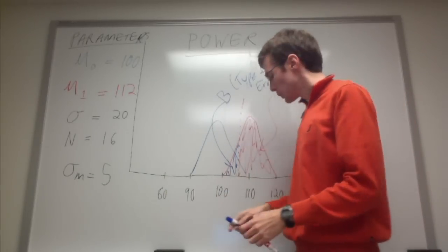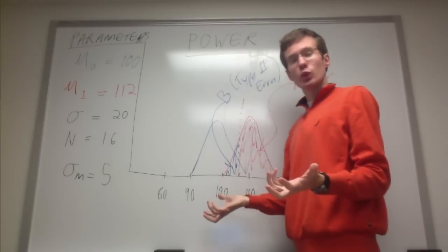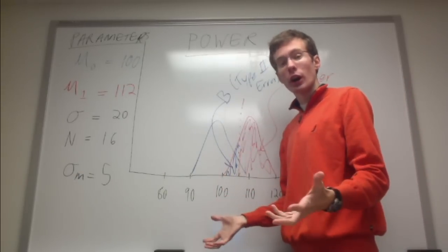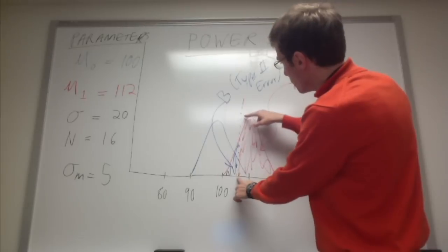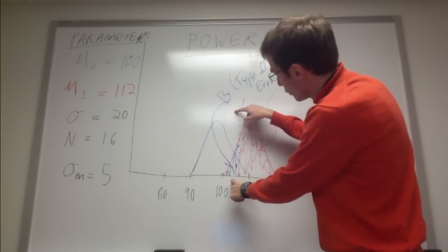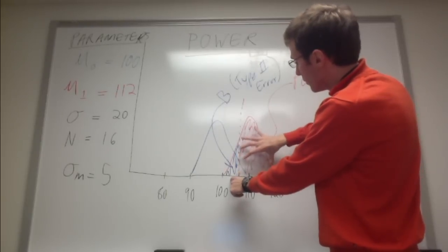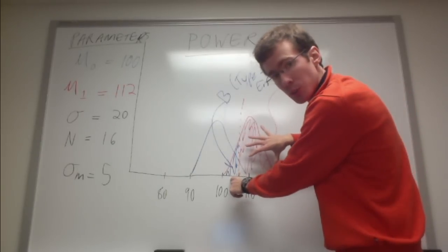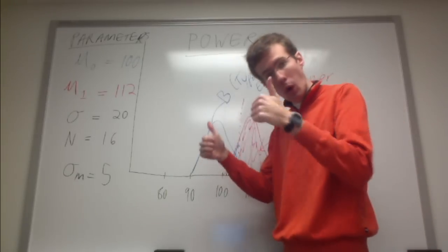There are a few ways that we can increase power. One is we could increase alpha, or our cutoff threshold, from say .05 to .1, and that would have the effect of moving this cutoff threshold farther to the left. In that case, even more of this area of the alternative distribution would lie to the right of the cutoff threshold and power would go up.